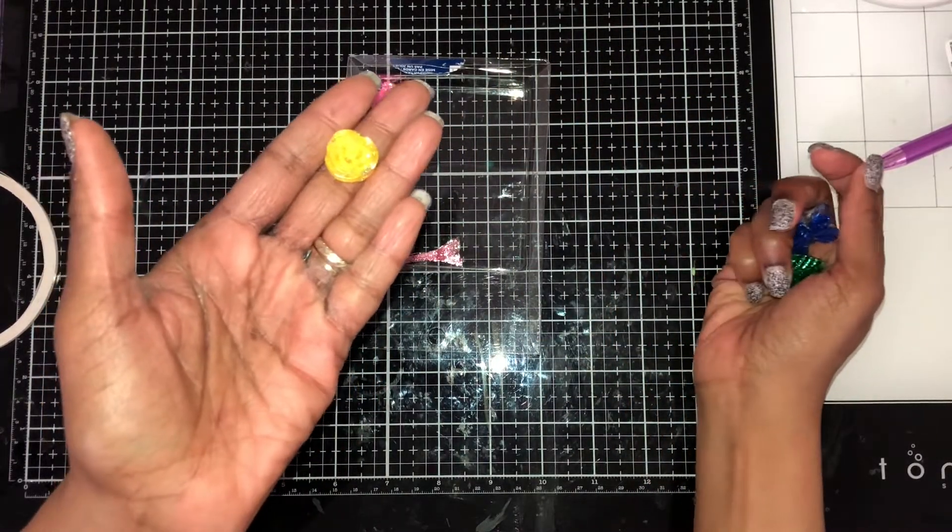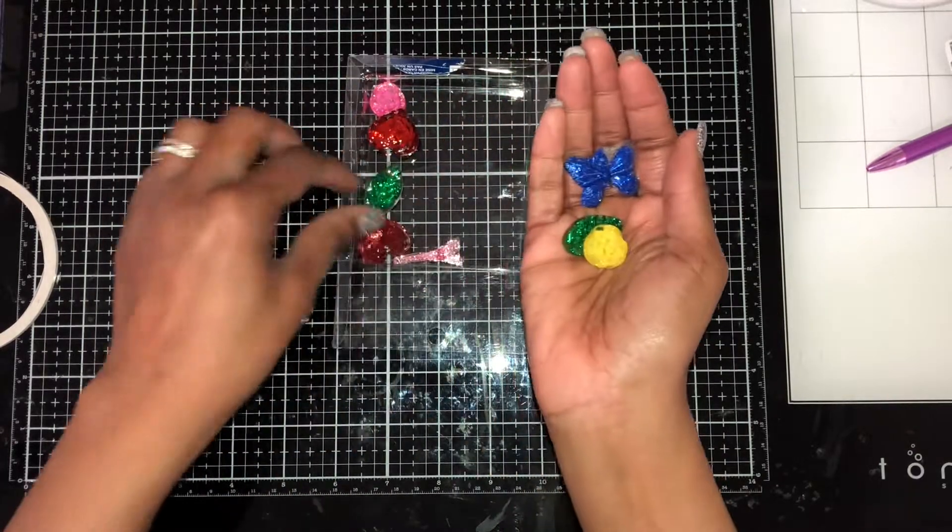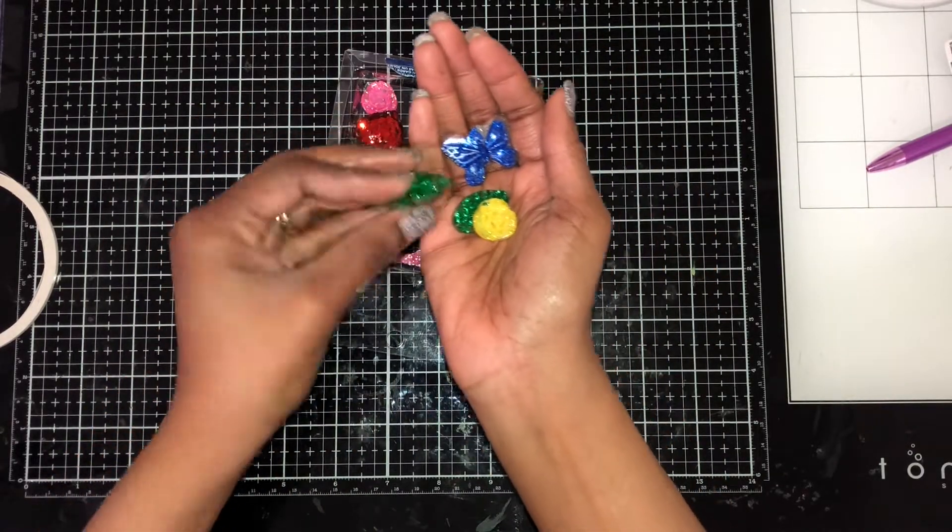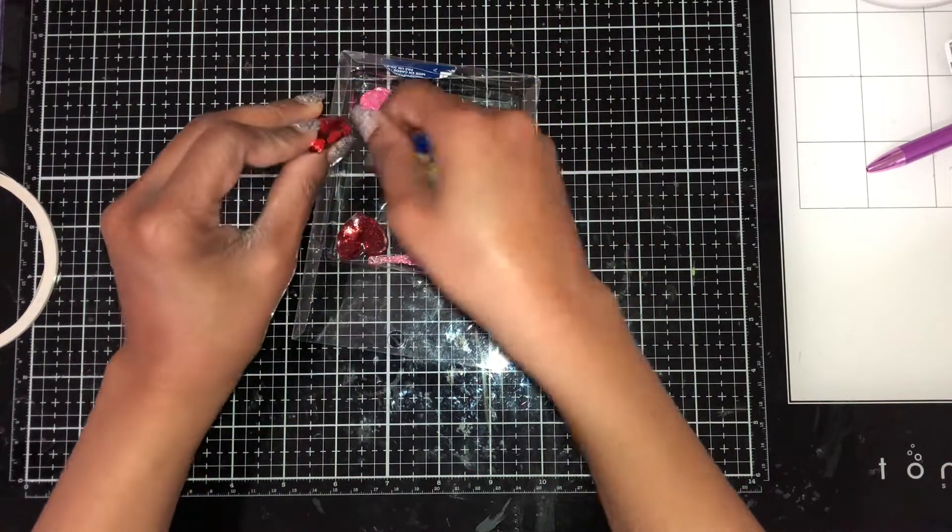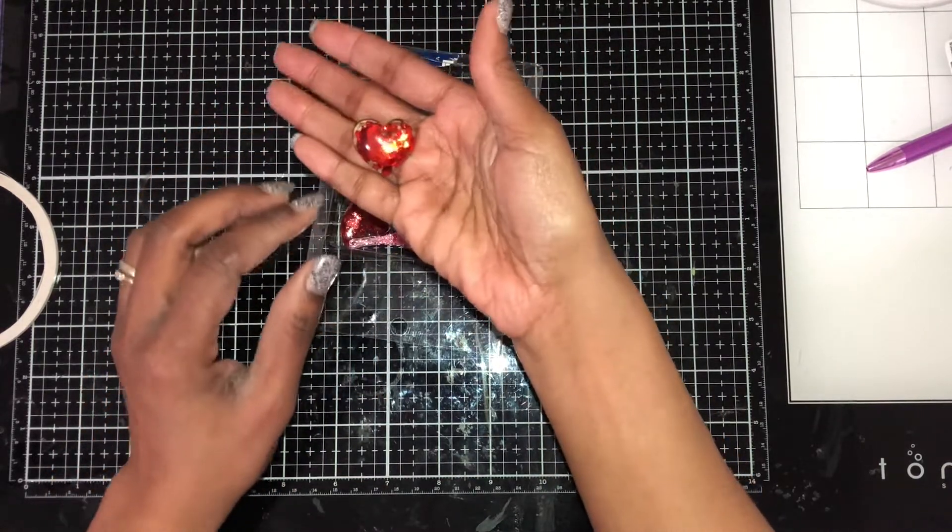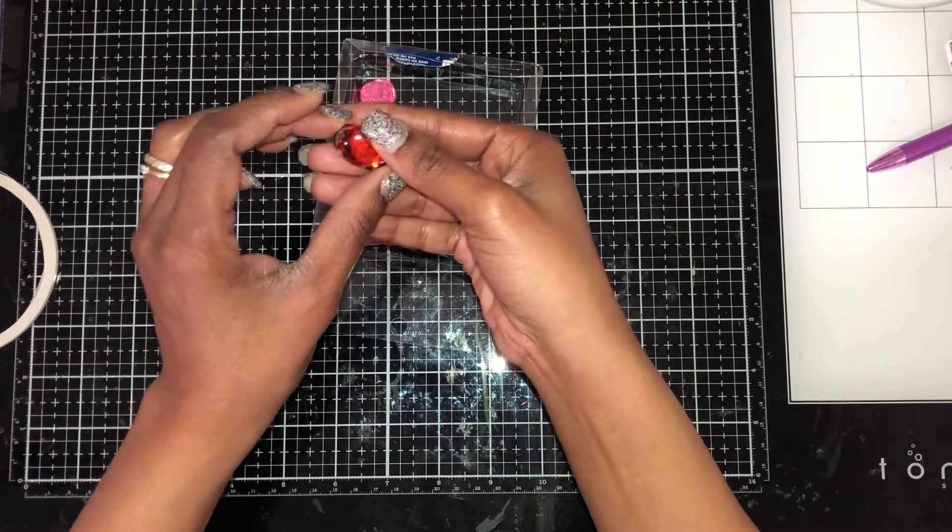This one is the rose and then another leaf. And in here I did a heart.